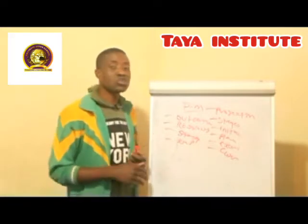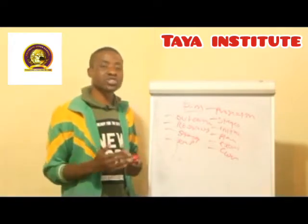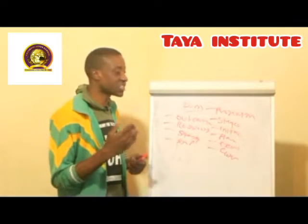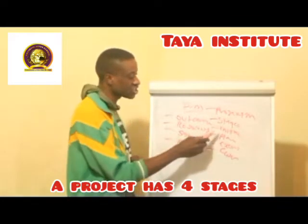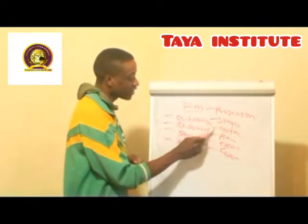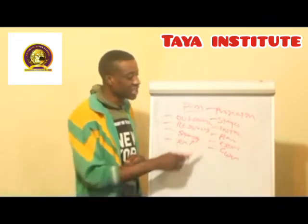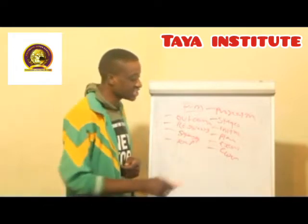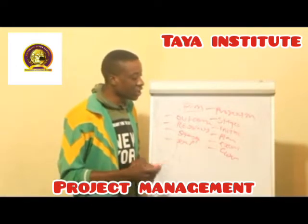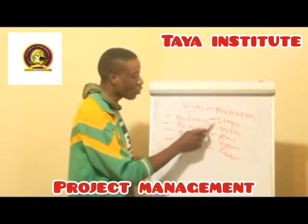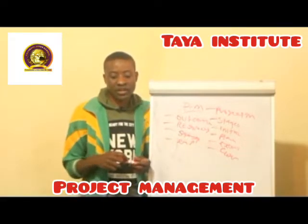Those are some of the things you have to understand: every project has got different stages. A project comes in four stages — the initiation stage, the planning stage, the execution stage, and the closing stage.